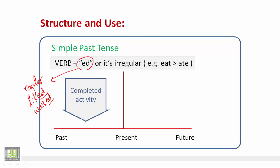Or it might be irregular — أو أن يكون الفعل غير قياسي، أي أن التصريف الثاني لا ينتهي بال-ED. For example, 'ate' كالماضي من 'eat'، كذلك 'wrote' كصيغة الماضي من 'write'.